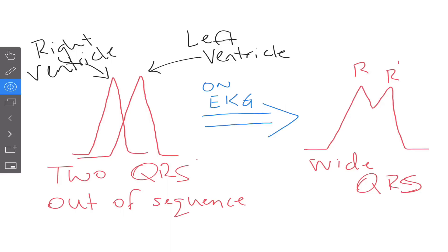So for a right bundle branch block, we need to have a few things. Again, greater than 0.12 second QRS, rabbit ears in V1. Again, V1 is going to be the area we always check for these things because we're going to have the best view of the P wave and the QRS.